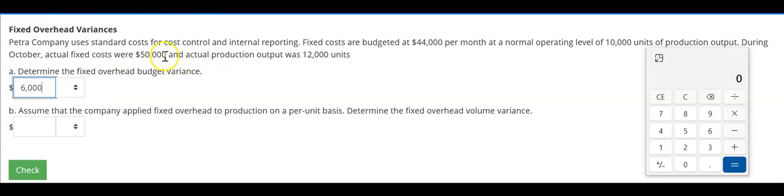And because we spent more than we expected to spend, this would be an unfavorable variance. Okay, now this second part, the way they've worded this is a little odd.